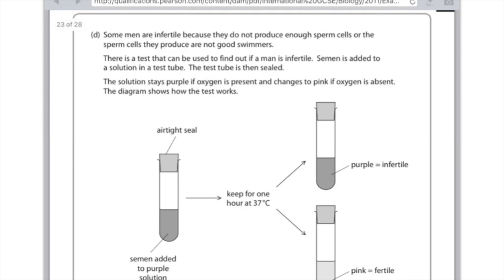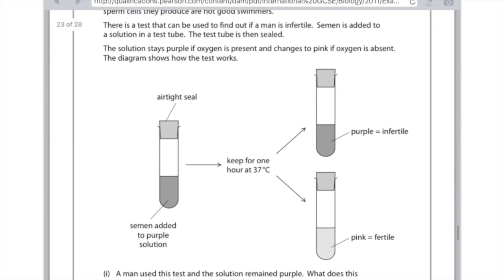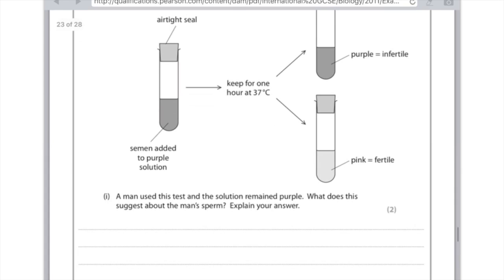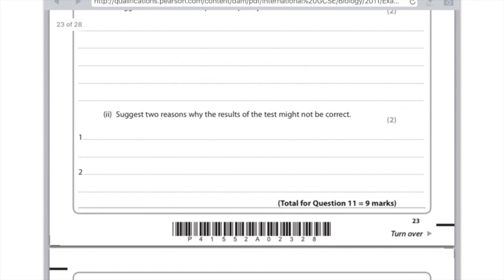Part D. Some men are infertile because they do not produce enough sperm cells or the sperm cells they produce are not good swimmers. There is a test that can be used to find out if a man is infertile. Semen is added to a solution in a test tube. The test tube is then sealed. The solution stays purple if oxygen is present and changes to pink if oxygen is absent. The diagram shows how the test works. So if it stays purple then it is infertile because that means oxygen isn't being used in respiration. If it goes pink then it tells us that the oxygen is absent and that the person is therefore fertile because that oxygen has been used in respiration. A man used this test and the solution remained purple. What does this suggest about the man's sperm? Explain your answer. Because it remains purple it means the oxygen is still present. So you need to say here that the man isn't using up the oxygen in respiration. And therefore it means that there are few sperm that can swim properly because they're just not generating enough energy. So the first one you'd say that he's not using oxygen. And the second one you say he's not respiring.